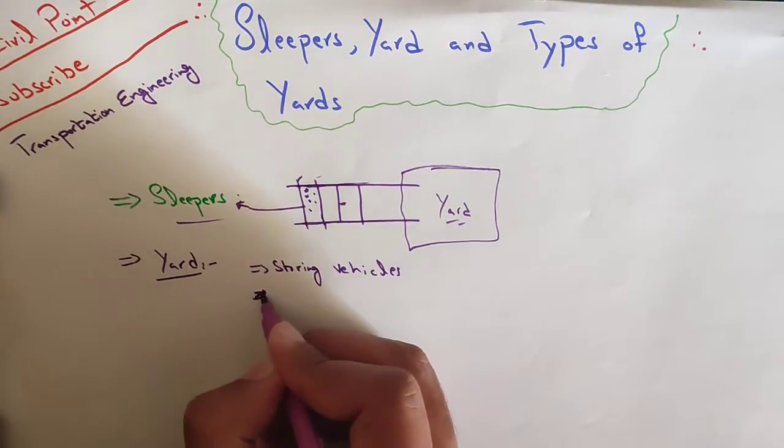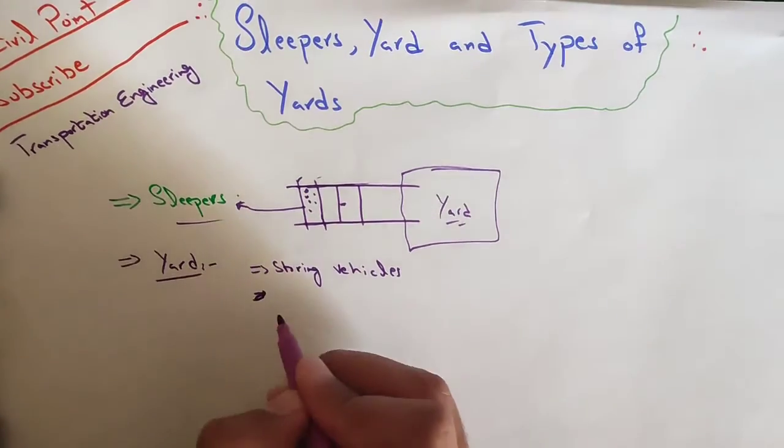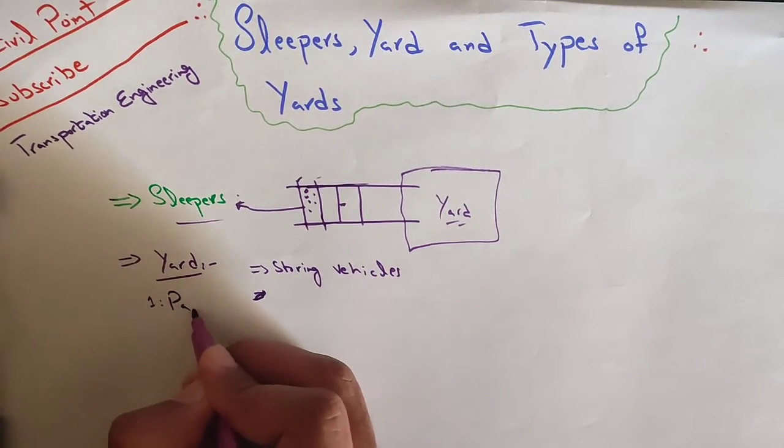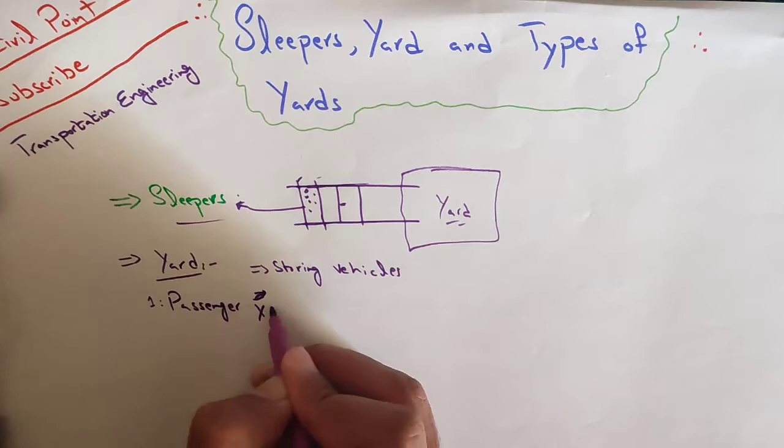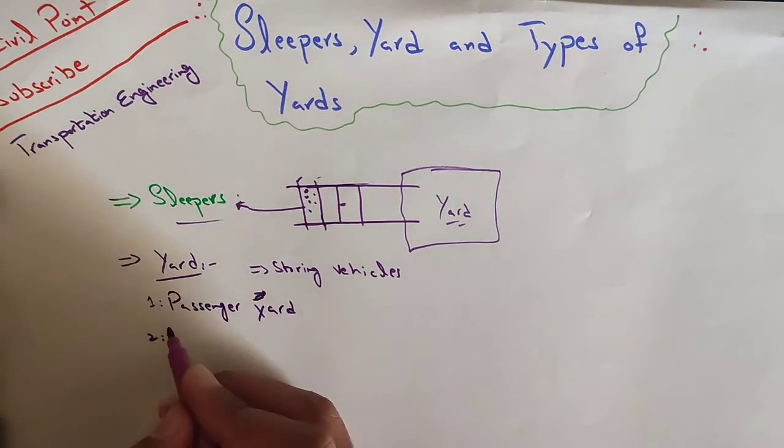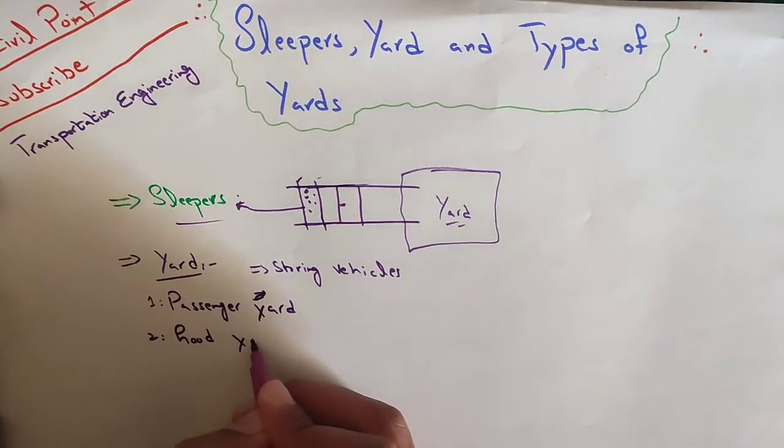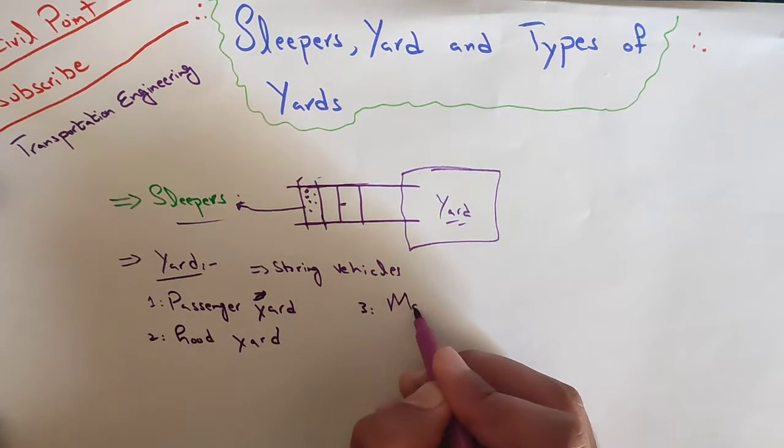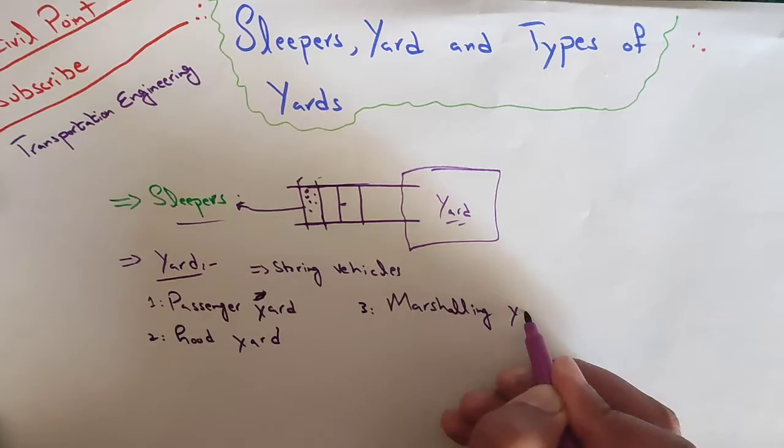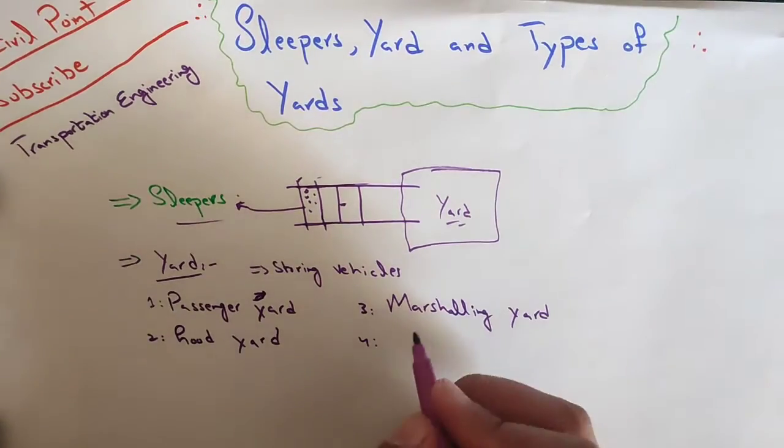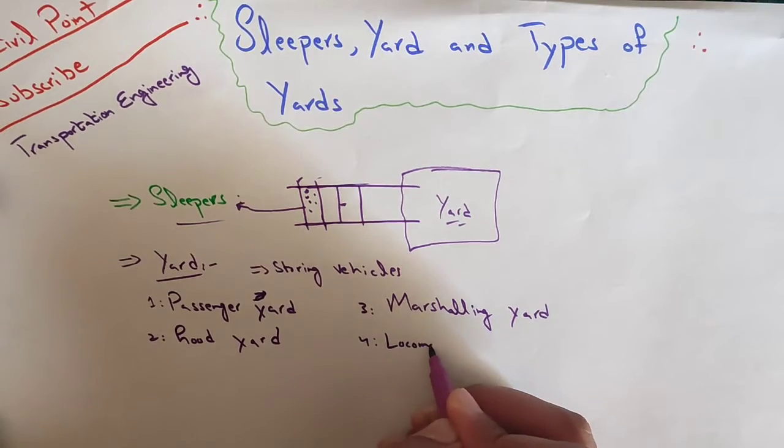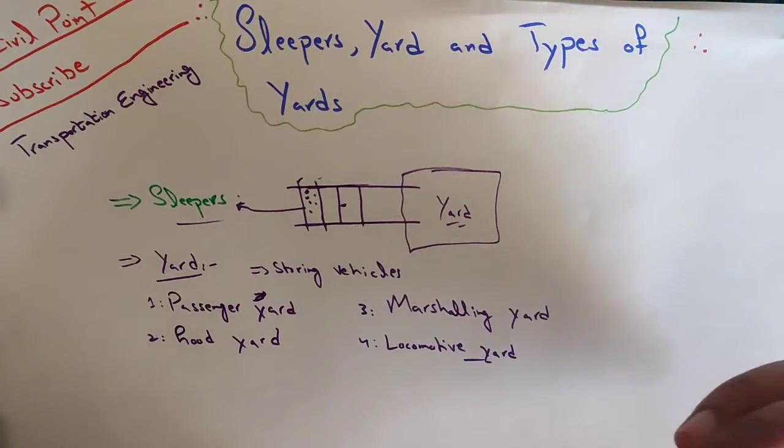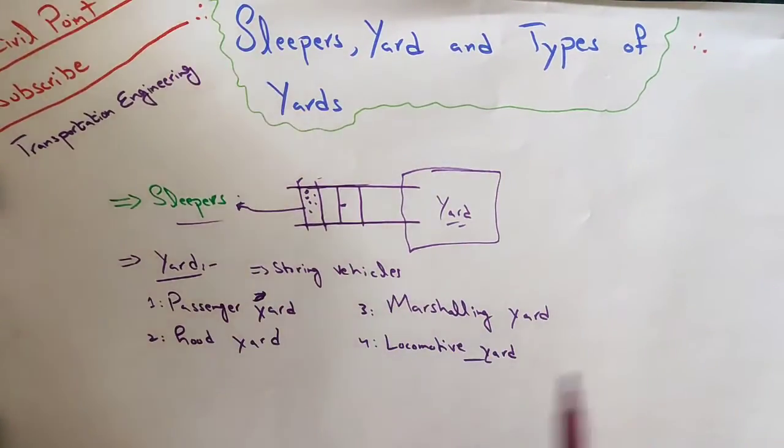We will study four types of yards. The first one is passenger yard, the second one is goods yard, the third one is marshaling yard, and the fourth and last one is locomotive yard. These are the major four types of yards and we will briefly study them one by one.